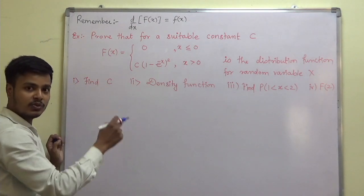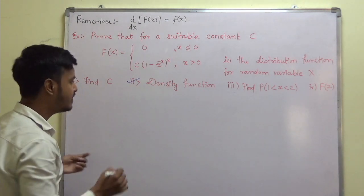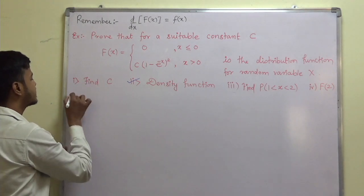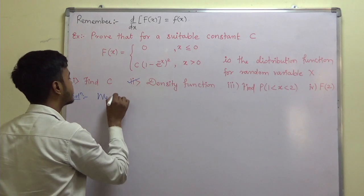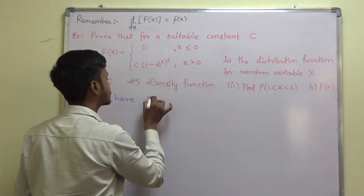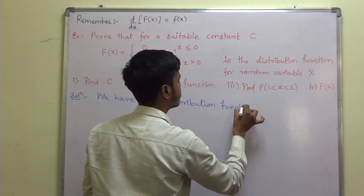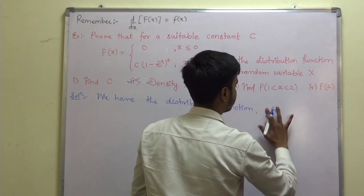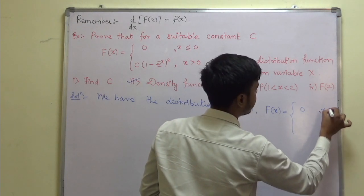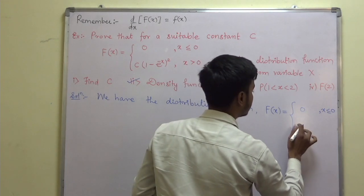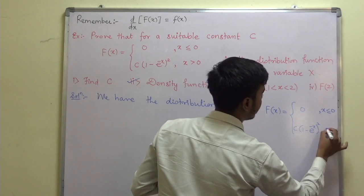To get C, I need to know the probability density function first. So let us find out the density function. We are going to find the second part first. We have the distribution function F of x equal to 0 for x less than or equal to 0, and C times (1 minus e to the power minus x) squared for x greater than 0.